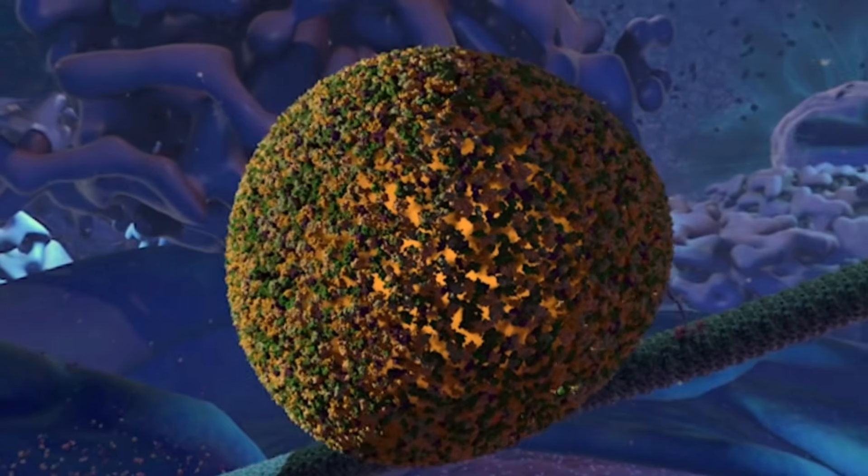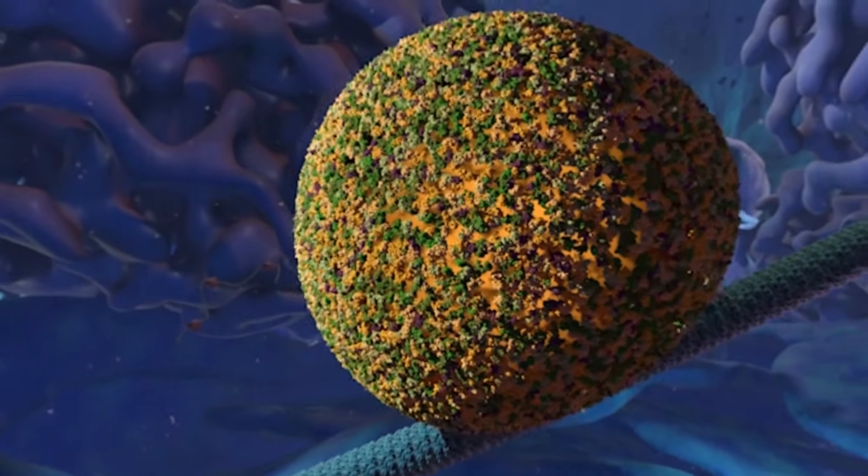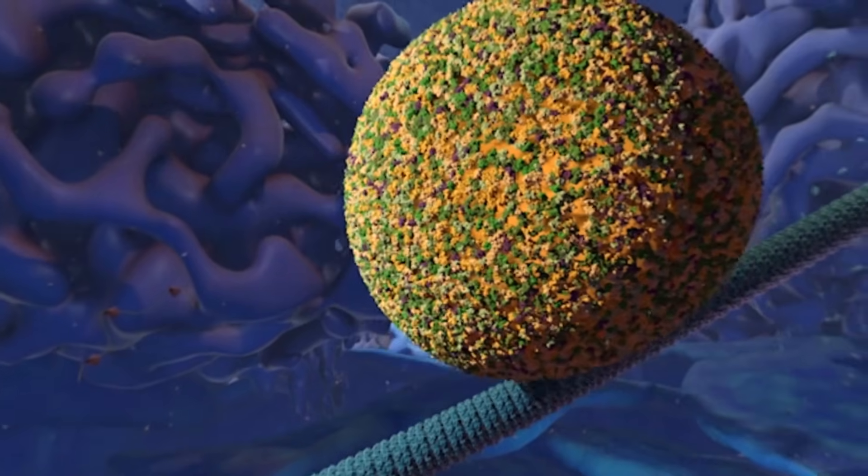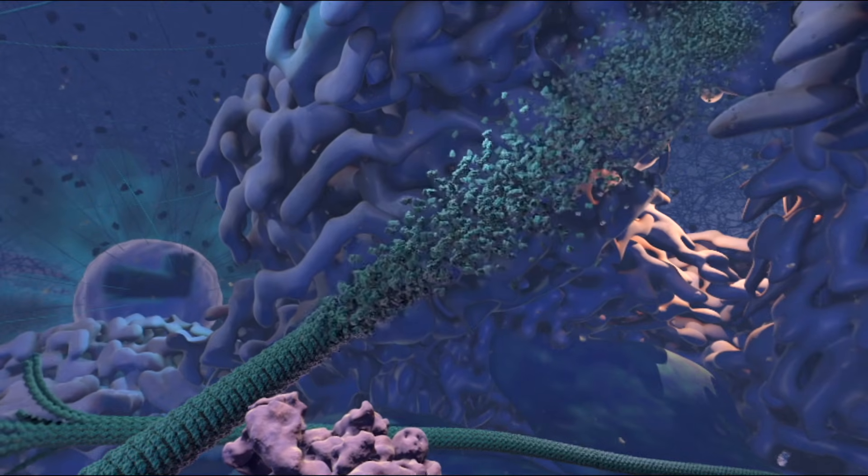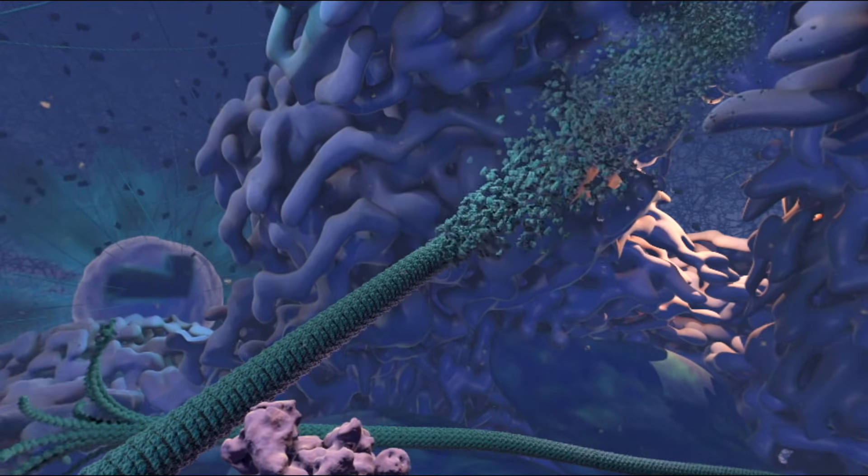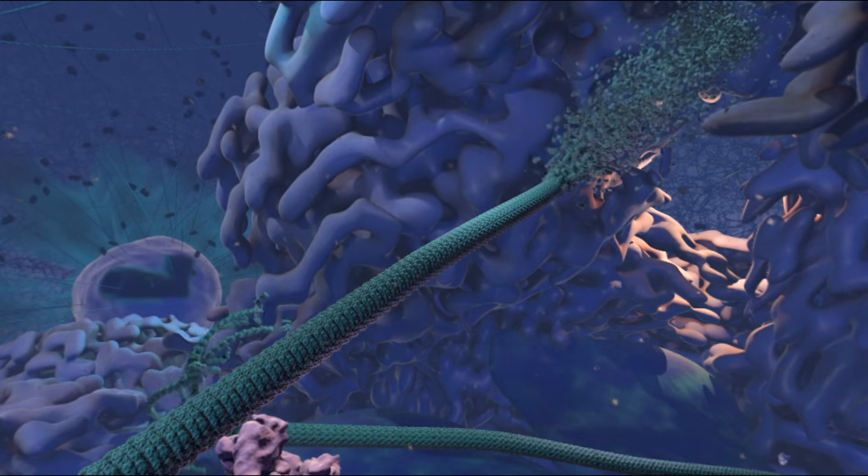But the interesting thing about microtubules is that they're not permanent. They can get taken apart and put together in different locations depending on what the cell needs. Here, the microtubule is being built or assembled from smaller parts that come together. Watch how they're added to the end.